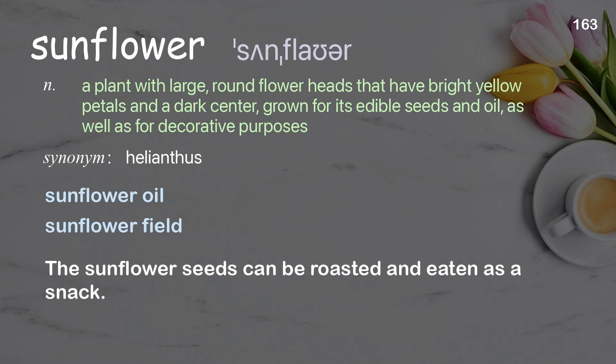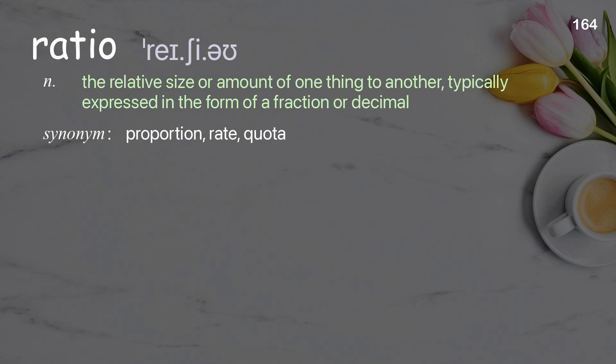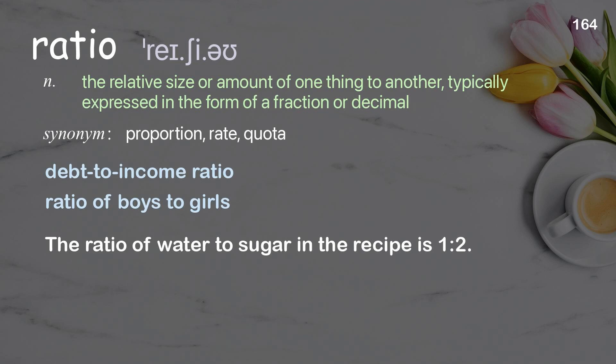Ratio: the relative size or amount of one thing to another, typically expressed in the form of a fraction or decimal. Examples: debt-to-income ratio, ratio of boys to girls. The ratio of water to sugar in the recipe is 1 to 2.